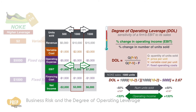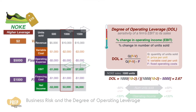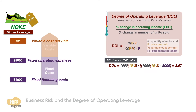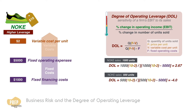Now it's your turn to do some calculations. If NOKEY's number of units sold is 500, what is the DOL at this level of production? If you got minus 4, you're correct.